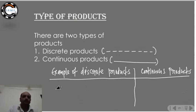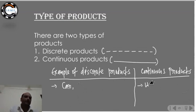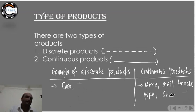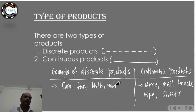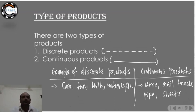Examples of discrete products include cars, fans, bulbs, and motorcycles — each produced individually. Examples of continuous products include wire, rail track, and pipes, where production is ongoing and uninterrupted. These are the two types of products found in the market.